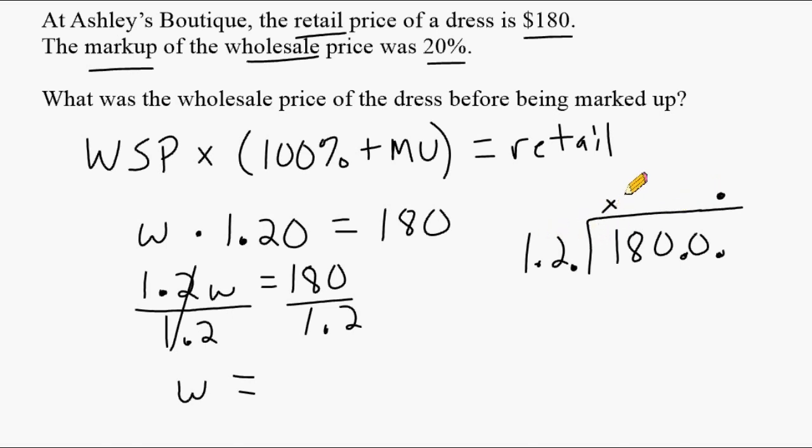That leaves us with 6. And we drop this 0. And 12 goes into 60 five times. Exactly 5 times. And I know the remainder is going to be 0. But I still have a blank space in this place value. So we just fill it with a 0. So the wholesale price before being marked up was $150.